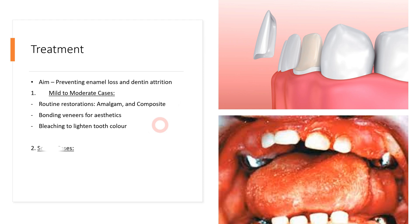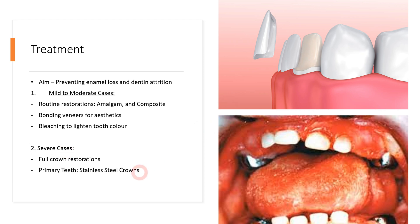In severe cases with significant attrition — where molars are severely worn down — we can place full crown restorations. The most commonly used full crown for these patients is the stainless steel crown, which offers good occlusal support and is very strong compared to PFM or zirconia crowns. Stainless steel crowns are the first-line treatment for severe cases, especially for primary teeth. For permanent teeth with aesthetic concerns, porcelain fused to metal crowns can be used.